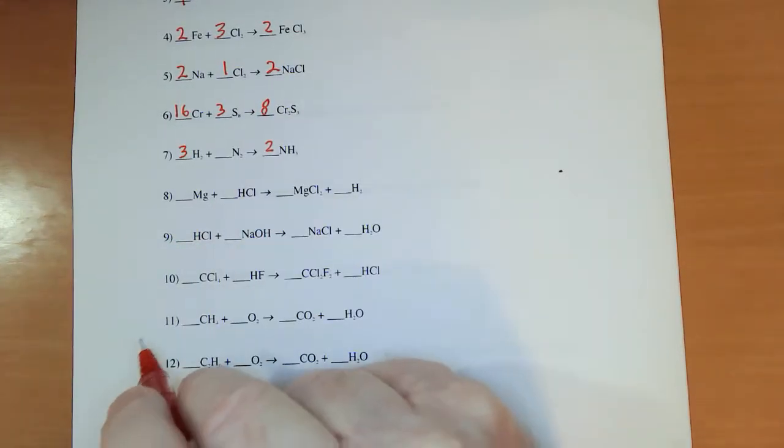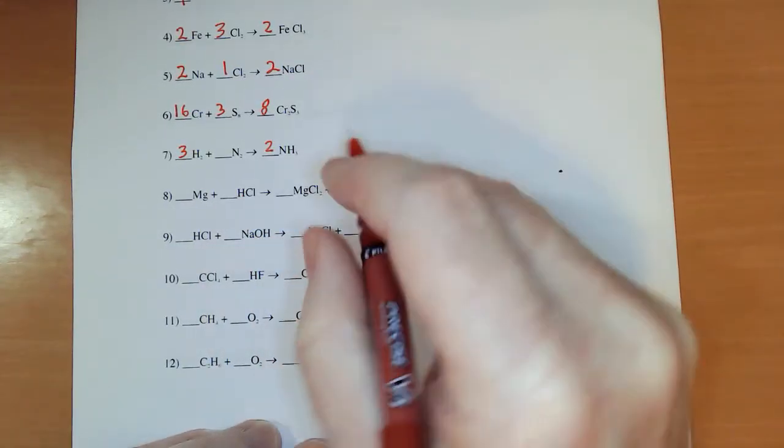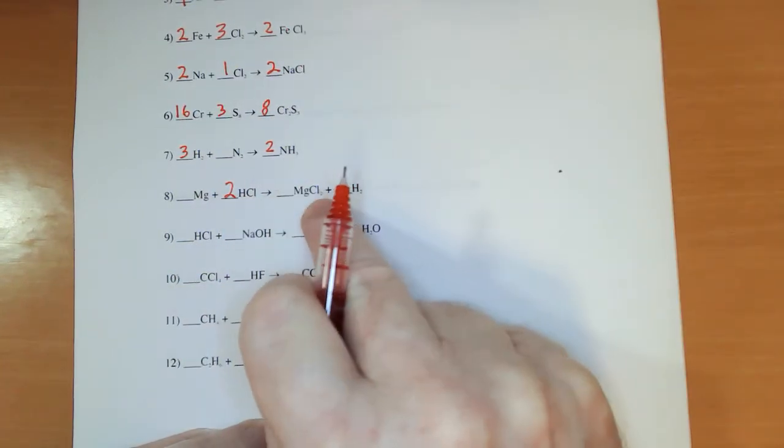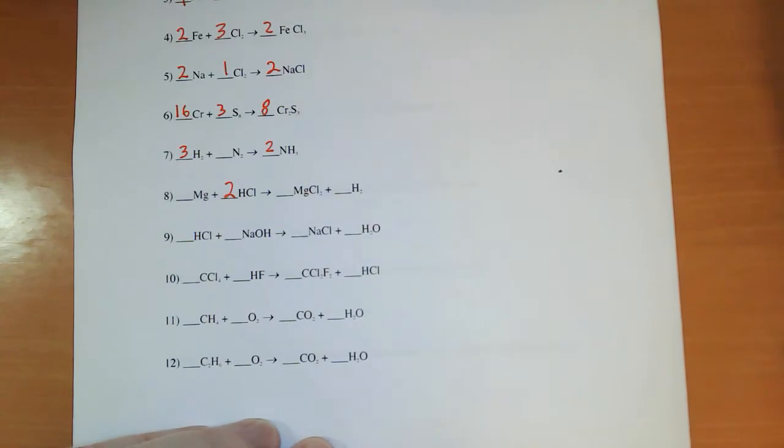One magnesium, one magnesium, one hydrogen. I got two hydrogens there. So I'll put a two there. Two H, that means I've got two Cls, two Cls. Hey, it's balanced.